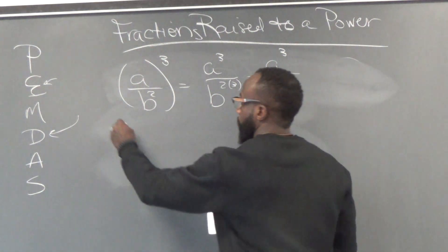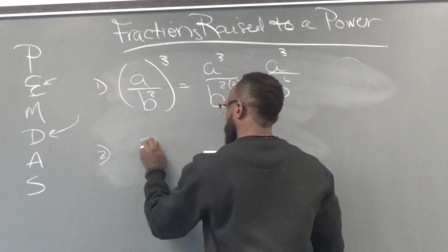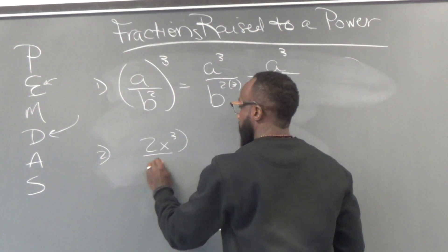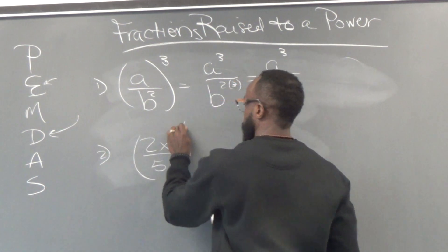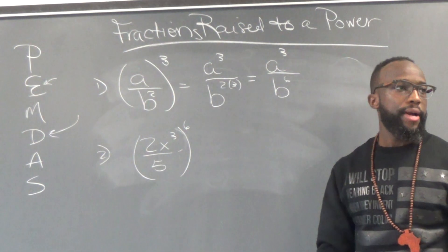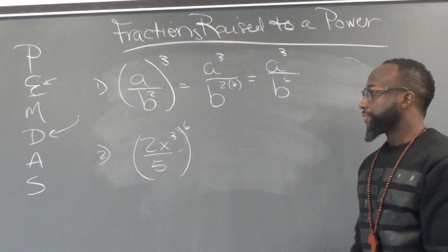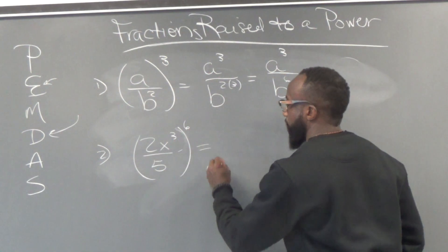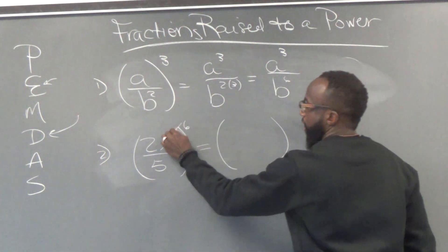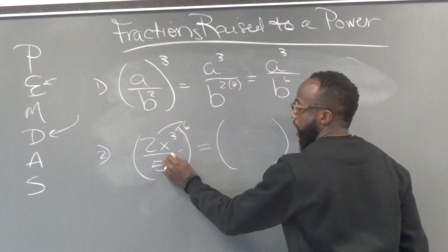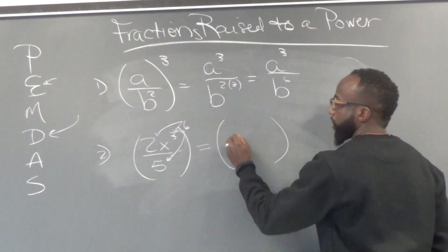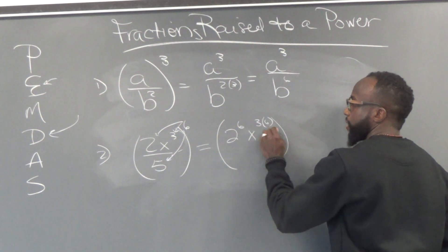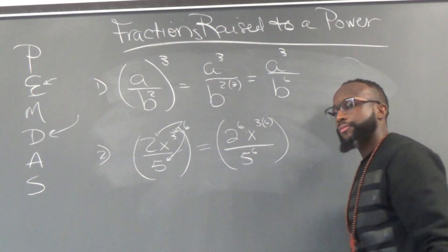Let's look at number two. Number two, you have 2x to the third over 5, all raised to the sixth power. Does everybody see that? Again, this can't be simplified anything, so we're just going to raise the power to a power. So we're going to raise everything to the sixth power. So everybody gets the sixth power. So you got 2 to the sixth power, then you got x to the 3 to the sixth power, all over 5 to the sixth power.